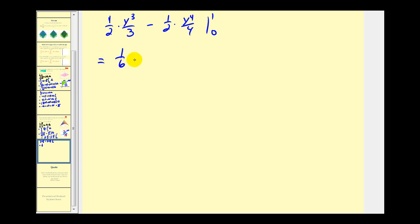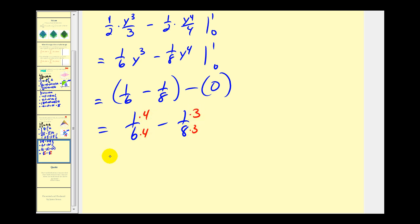Let's finish this on the next slide. Here we have 1 sixth y to the third minus 1 eighth y to the fourth. When y is 1 we'll have 1 sixth minus 1 eighth, and when y is 0 these will both be 0. So we have 1 sixth minus 1 eighth with a common denominator of 24. We have 4 over 24 minus 3 over 24. So it looks good, we have 1 over 24 just as before.